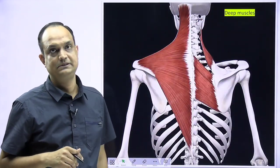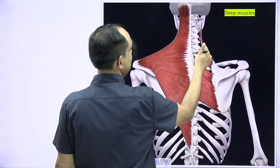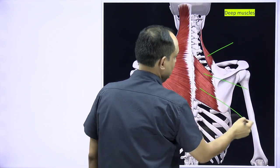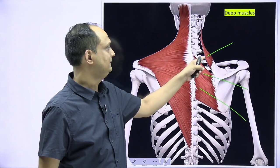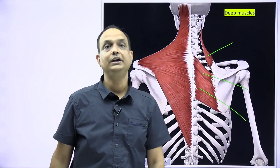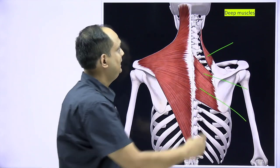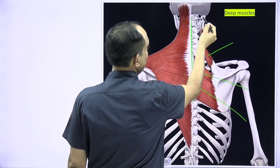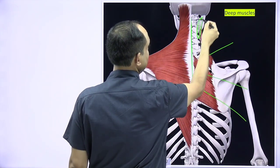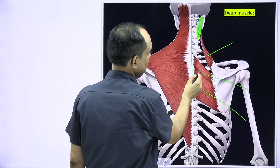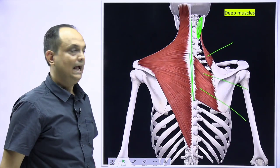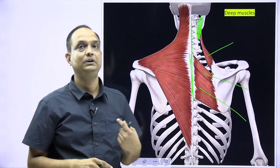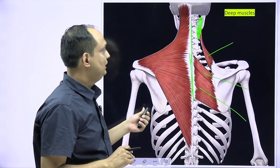The three deep muscles of the back, visible after removing the trapezius, are levator scapulae, rhomboidus minor, and rhomboidus major — from above downward. All three insert on the medial border of the dorsal surface of the scapula and arise from the posterior side. Levator scapulae originates from the transverse processes of the cervical vertebrae, while the rhomboids come from the midline. All three are supplied by the dorsal scapular nerve, arising from C5.